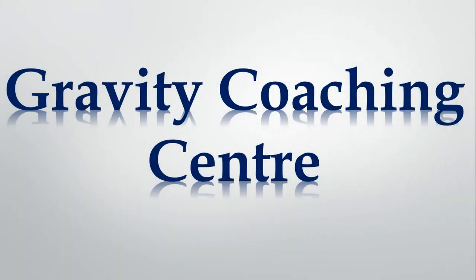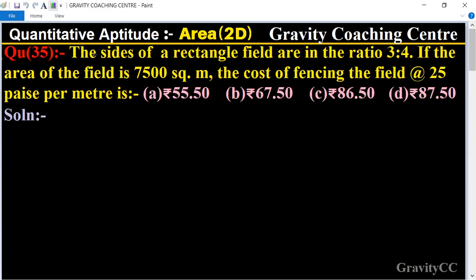Welcome to our channel Gravity Coaching Centre. Quantitative Aptitude, chapter Area, question number 35. The sides of a rectangle field are in the ratio 3 to 4. If the area of the field is 7500 square meters, the cost of